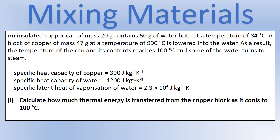Now we move on to scenarios involving state changes. We have an insulated copper can of mass 20 grams with 50 grams of water inside, both at thermal equilibrium at 84 degrees Celsius. A copper block at 990 degrees Celsius is added. The final temperature reaches 100 degrees and some water turns to steam. We're given specific heat capacities and the latent heat of vaporization. First, calculate how much thermal energy is transferred from the copper block as it cools to 100 degrees.